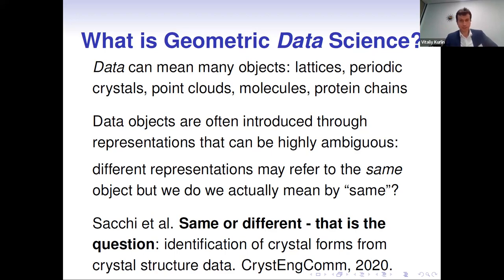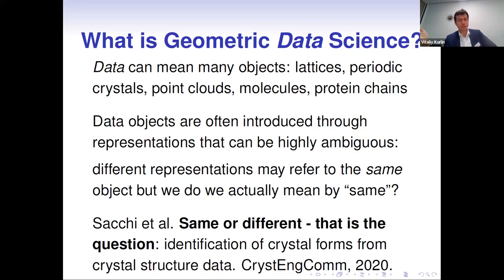Examples of what we mean by data include point clouds, molecules, and protein chains. Usually when we see real data objects, they are given in some digital form — a representation that can be ambiguous, in the sense that different representations might actually refer to the same object.